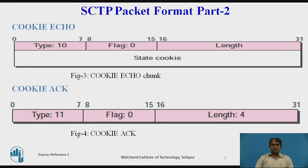The Cookie Echo chunk is the third chunk sent during association establishment. It is sent by the endpoint that receives an init-ACK chunk. The packet that carries this chunk can also carry user data. The format is shown in the figure. This is a simple chunk of type 10. In the information section, it echoes the state cookie that the endpoint previously received in the init-ACK. The receiver of the init-ACK cannot open the cookie.